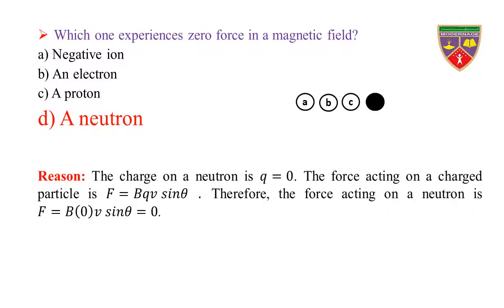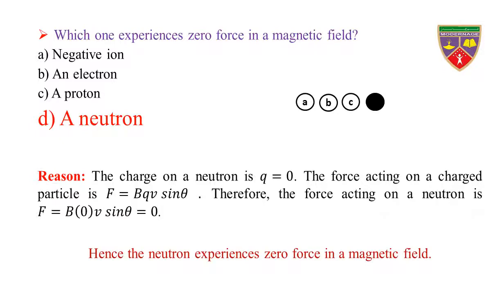Reason: The charge on a neutron is Q = 0. The force acting on a charged particle is F = BQV sinθ. Therefore, the force acting on a neutron is F = B × 0 × V sinθ = 0. Hence, the neutron experiences zero force in a magnetic field.